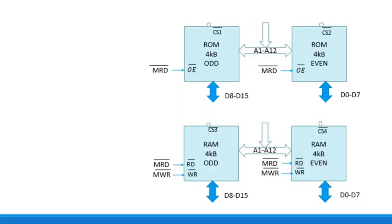Similarly, we draw block diagrams for the RAM memory, which is also 8 kilobytes in total, as two blocks. We connect both memory read and write signals to the RAM because RAM supports reading and writing. Data lines D0–D7 connect to the even memory bank and D8–D15 to the odd memory bank. Address lines A1 to A12 connect to the RAM. CS3 and CS4 are the chip selection pins, and we need to design a circuit for this chip selection.